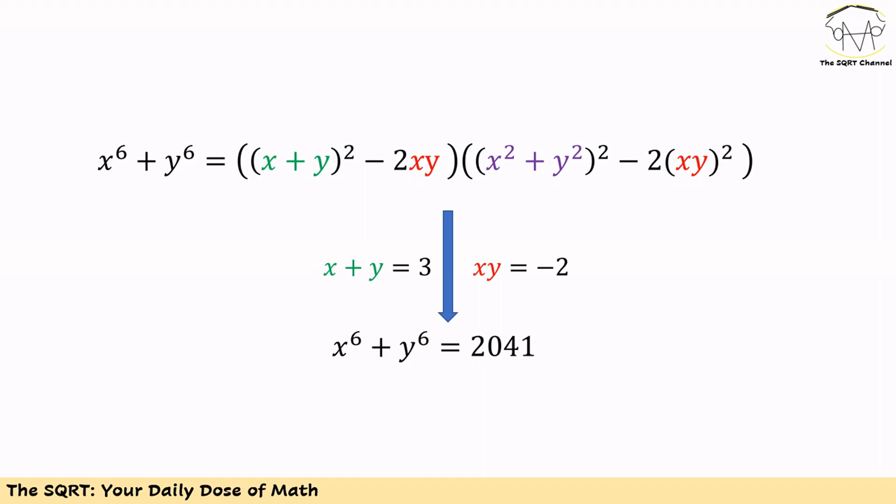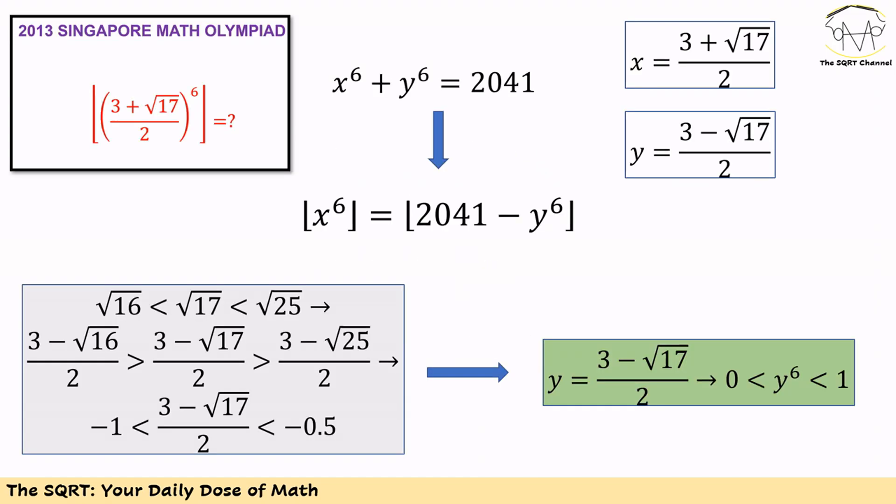We get 2041 for x to the power of 6 plus y to the power of 6. Now we have x to the power of 6 plus y to the power of 6, but we need to find the value just for x to the power of 6. So we can write x to the power of 6 is equal to 2041 minus y to the power of 6. Remember, we need to apply the floor operator on x to the power of 6.